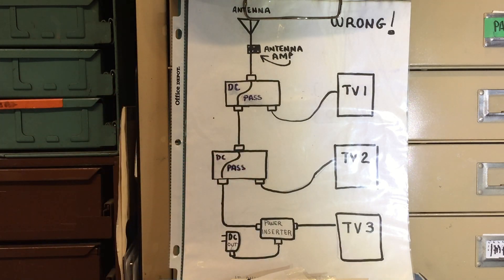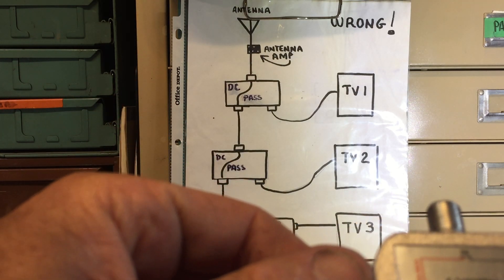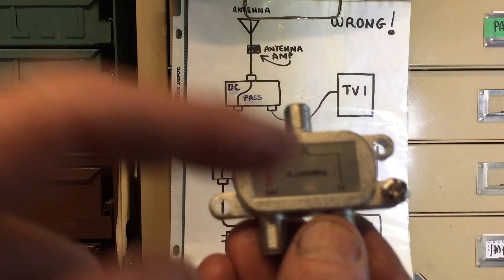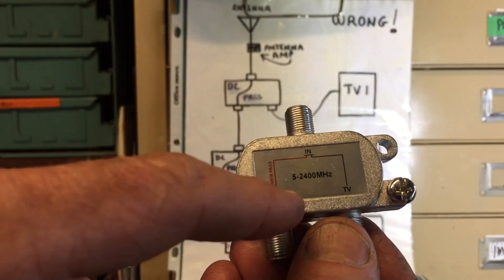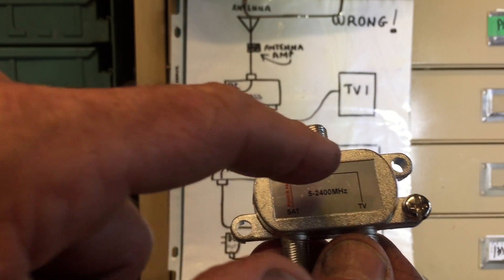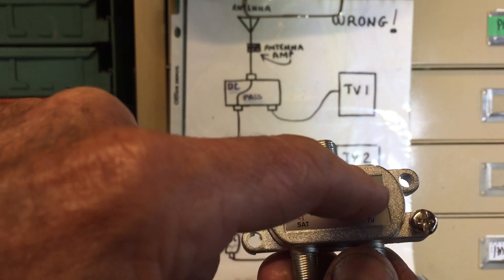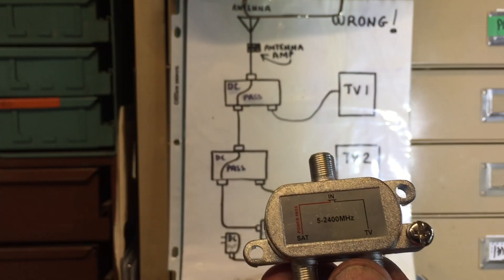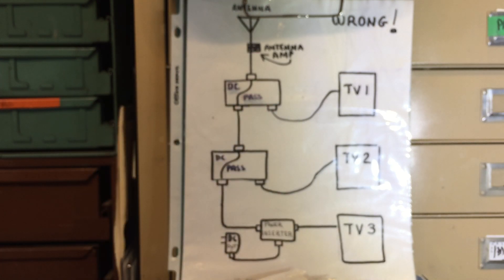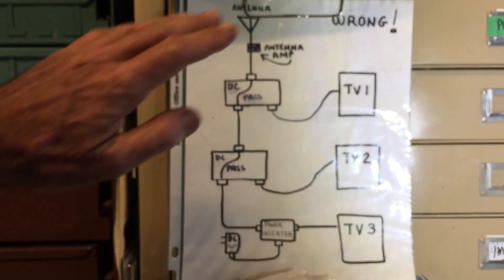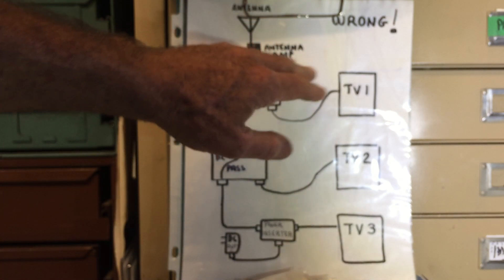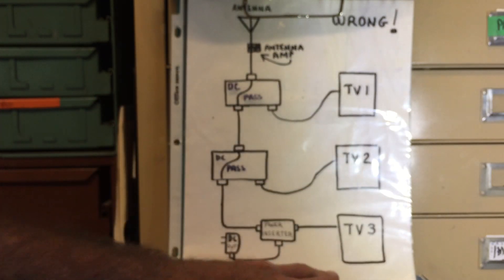You'll often see this where you'll have a splitter like this. One side might say SAT on it indicating satellite, because the satellite LNB needs power as well. The other side can pass a signal and there's isolation. Anyway, I went ahead and put the whole system together thinking everything would be great, and when I was done, guess what? Same problem. I had great reception on the first TV, missing channels on the second one, third TV no channels at all.